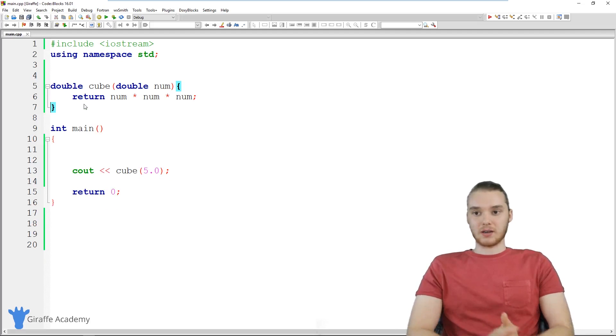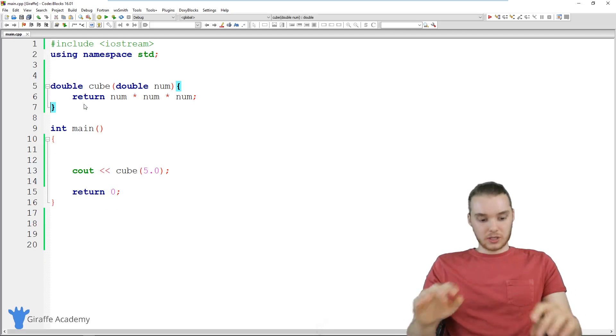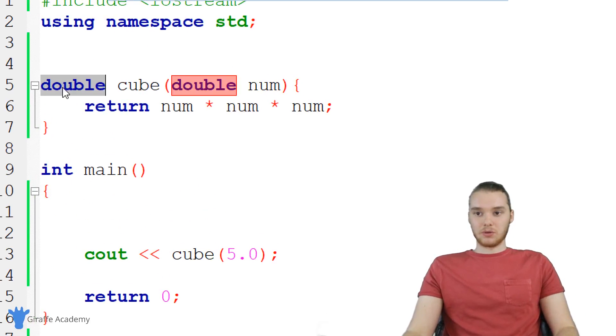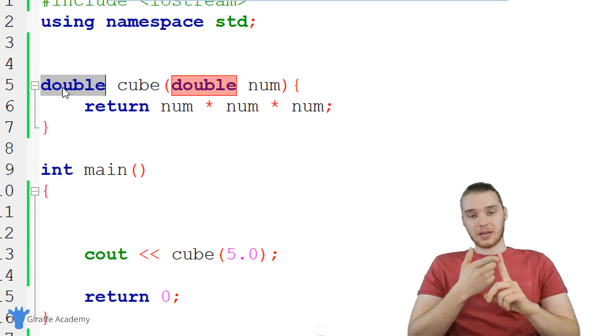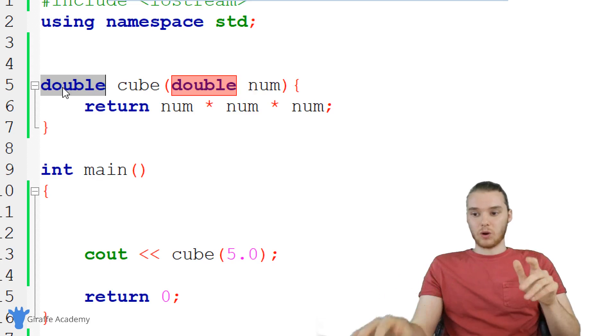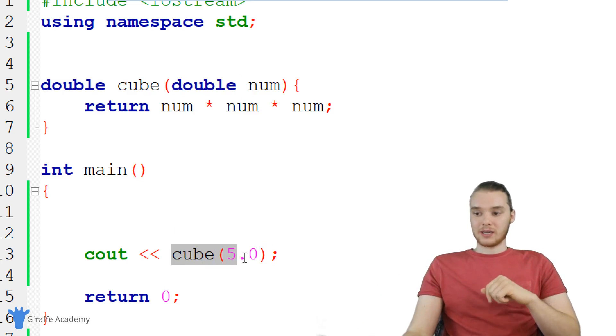And that's sort of the basics of using returns. So like I said, if you didn't want to return a double, you could return any type of data, I mean, a string, you can even return something like an array. So really, you can return anything you want. And then that value will get stored over here.